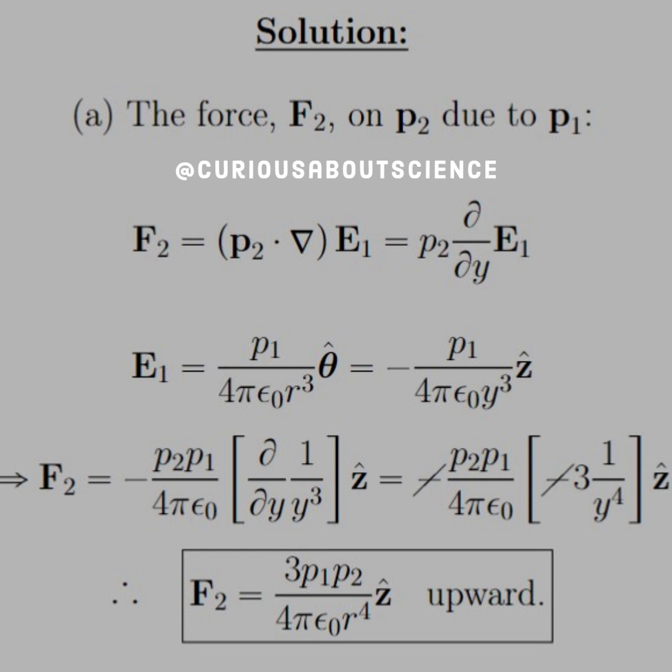This simplifies down to P2 and the partial derivative with respect to y of E1. We know that the electric field from P1 is P1 over 4πε₀r³ in the θ hat direction. This transcribes into negative P1 over 4πε₀y³ in the z hat direction. So plugging these all in, we just take the derivative and we get a nice compact equation: F2 equals 3P1P2 over 4πε₀r⁴ z hat. So it's pointing upwards and it's positive.